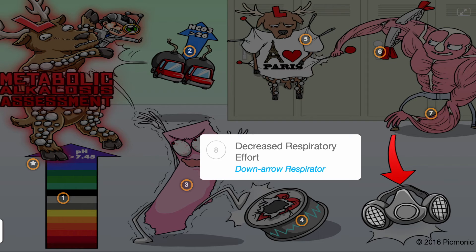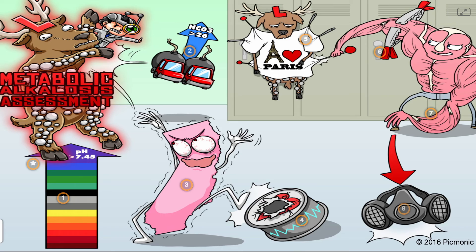Let's revisit metabolic alkalosis. There is an increased blood pH greater than 7.45, as well as an increased bicarbonate value above 26. Patients display signs of an excitable state and can have arrhythmias, paresthesias, and muscle cramps. Muscle weakness can develop, which can lead to decreased respiratory effort.